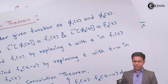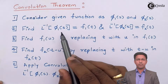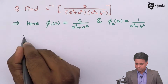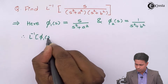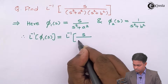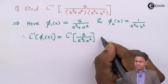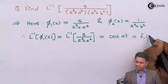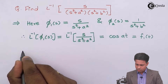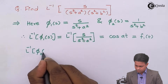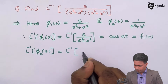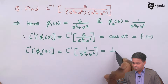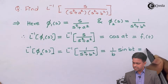Step number two: we find the inverse Laplace transform of φ₁(S), which gives F1(T), and similarly the inverse Laplace transform of φ₂(S), which gives F2(T). By the standard formula, the inverse Laplace transform of S/(S² + A²) is cos(AT), so F1(T) = cos(AT). The inverse Laplace transform of 1/(S² + B²) is (1/B)sin(BT), so F2(T) = (1/B)sin(BT).